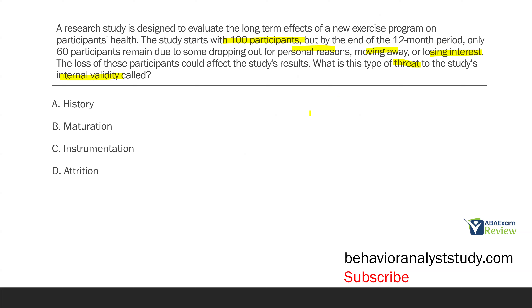Maturation is the natural growth or evolution of a participant over time. Maturation happens to everyone and is especially potent in younger children who are developing at a quick rate, so you want to be aware of it especially over 12 months. But in this case, we're not worried about that. Instrumentation has to do with how we're measuring or collecting data — also not what the question is asking. The question is asking about participants who are dropping out. When we're talking about losing participants for one reason or another, we're talking about attrition. After 12 months, we've lost 40 participants due to attrition, and this is a threat to internal validity.